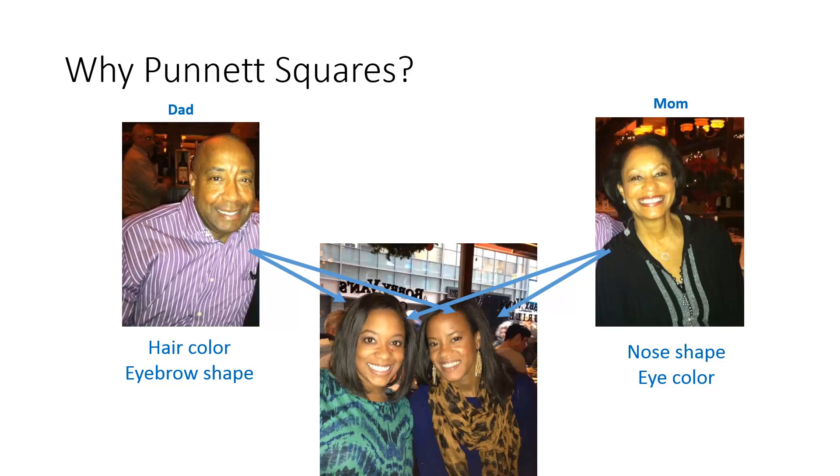And that's because they could use a Punnett Square. Inherited traits like hair color, your eyebrow shape, nose shape, eye color - those things come directly from your parents and are passed on to you. And then you will pass on those traits to your children. In this lesson, we're going to study how do we figure out what the traits are going to be for the offspring.